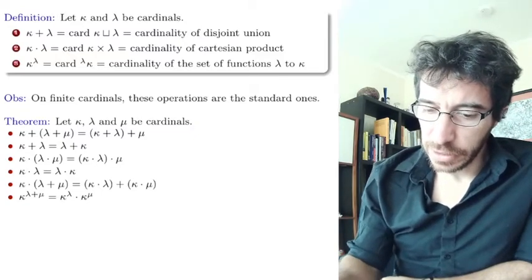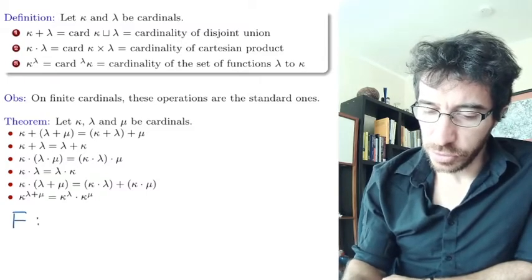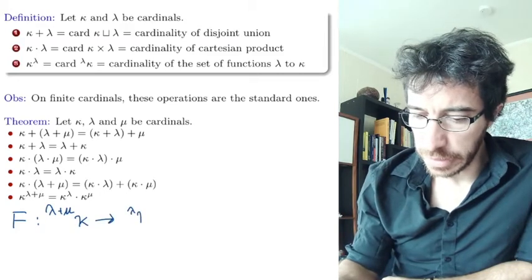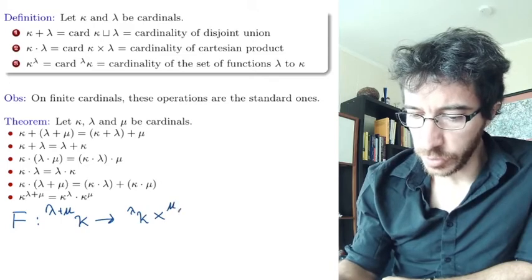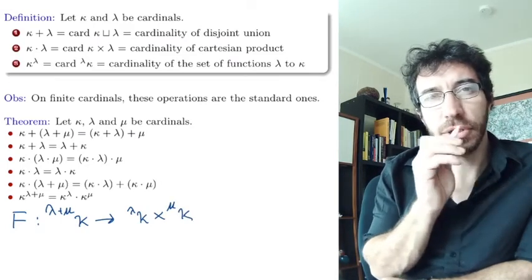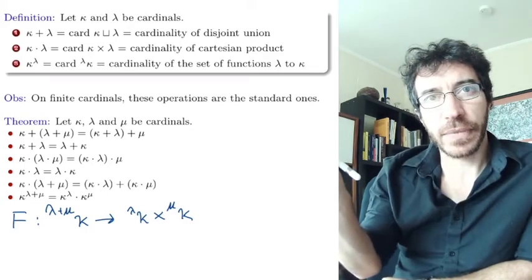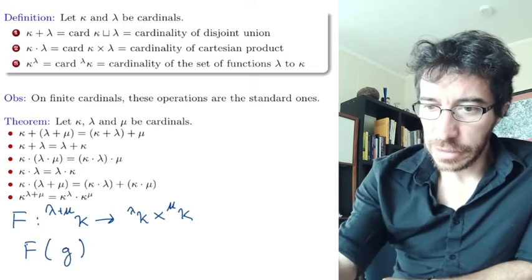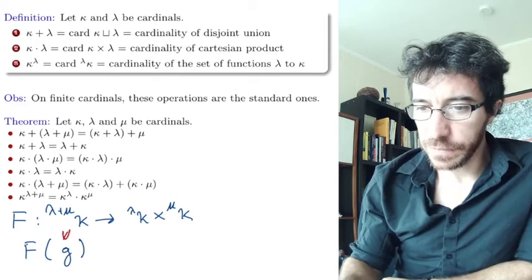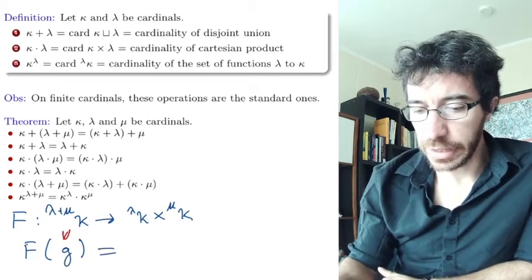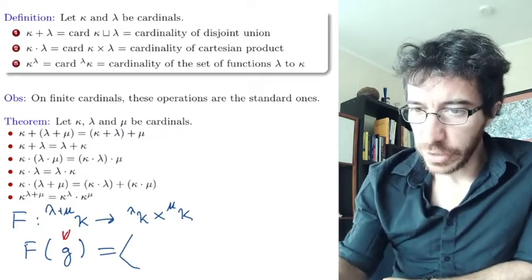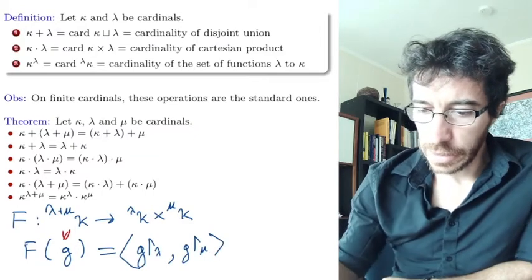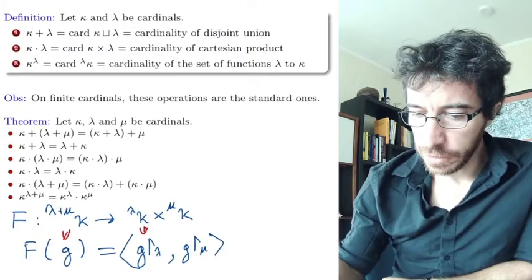Exponentiation has some nice interesting properties. For instance, we want to define a function f from the set of functions from (lambda + mu) to kappa, to the set of functions from lambda to kappa times the set of functions from mu to kappa. If we have a function g in the first set, we map it to the pair (g restricted to lambda, g restricted to mu). One belongs here and the other belongs there.